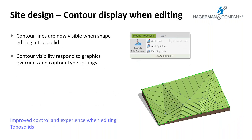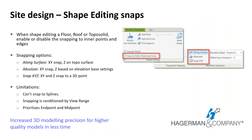Revit 2025 enables the display of contour lines in slab shape editor mode if they are visible in the view. Previously, no contours could be seen from the toposolid editing mode. The contour display responds to visibility graphics overrides and the contour setting in toposolid type properties. You can also enable or disable snapping to internal points and edges when in shape editing mode — the option is available when editing floors, roofs, and toposolids.